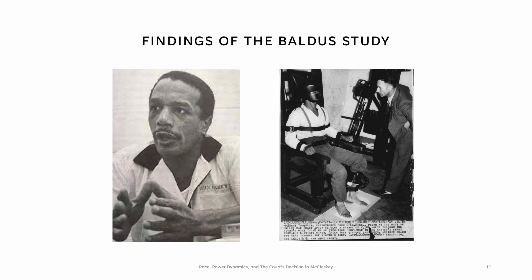In Justice Brennan's words — and another quote by Justice Brennan — according to Bowers, after controlling for 230 correlates, Professor Baldus' study concluded that the killers of white victims were significantly more likely — indeed 4.3 times more likely than those who killed blacks — to receive the death penalty in Georgia.